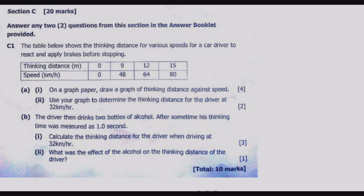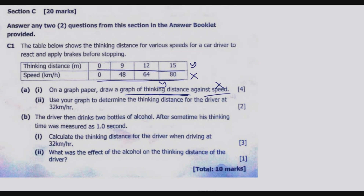Part (ii): use the graph to determine the thinking distance for the driver at 32 kilometers per hour. For the graph, thinking distance is on the y-axis and speed is on the x-axis. We need to understand the spread of the units — the minimum is 0 and the maximum is 15 for thinking distance — so we know how we are going to draw the graph.